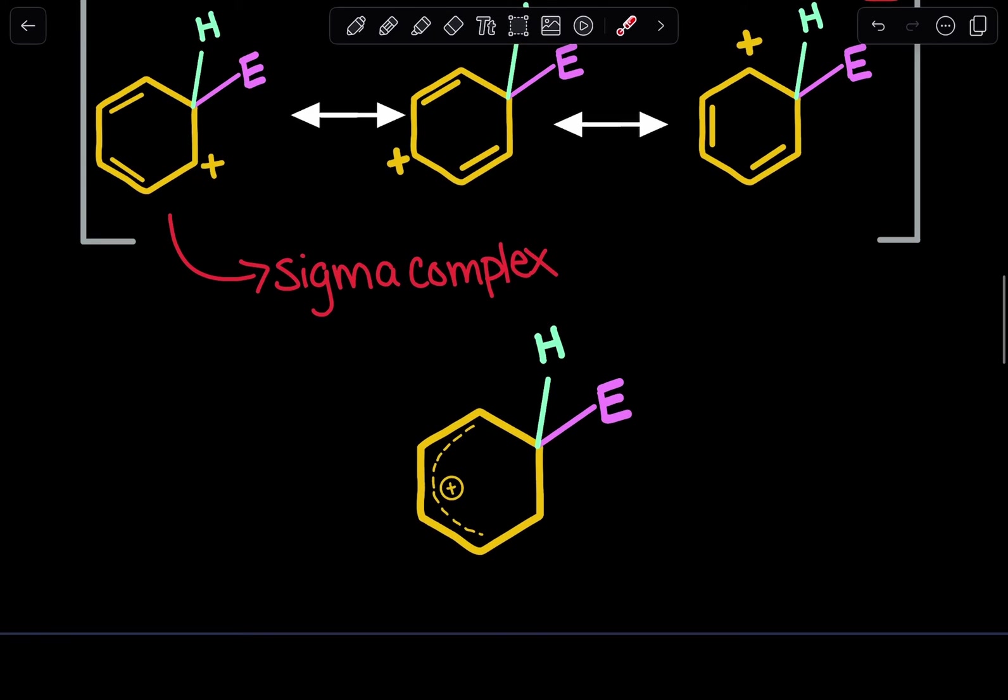To simplify this, instead of drawing all these resonance structures, you can also draw the Arrhenius ion. This simply tells us that we can draw this dotted line and a positive charge to denote that these electrons are delocalized within this aromatic compound. They're delocalized right over here instead of all the way throughout because the sigma complex is no longer aromatic because this carbon is sp3 hybridized. It has four bonds.